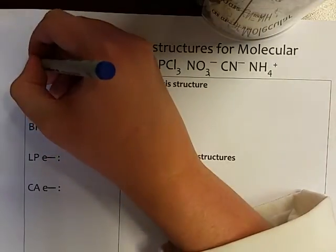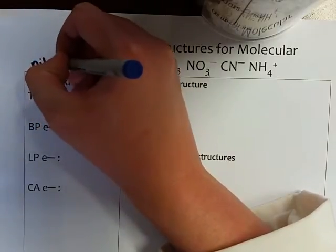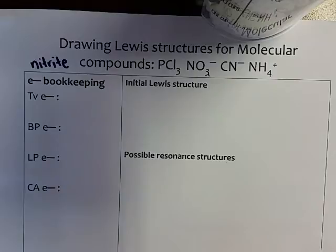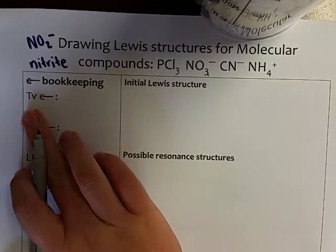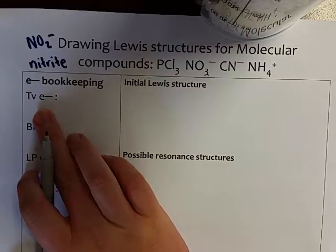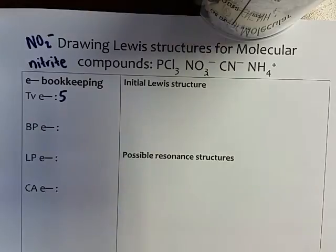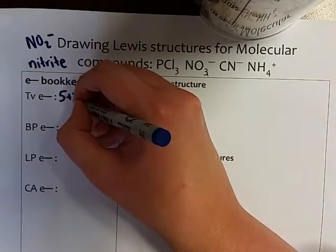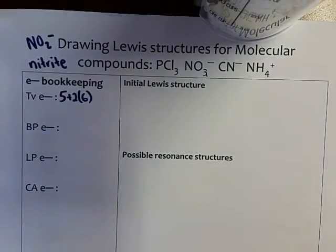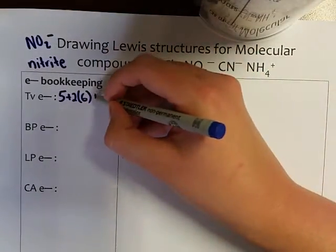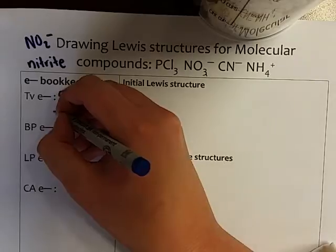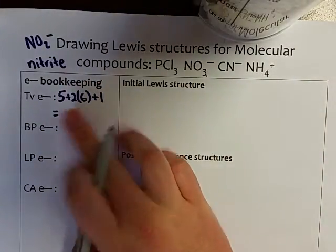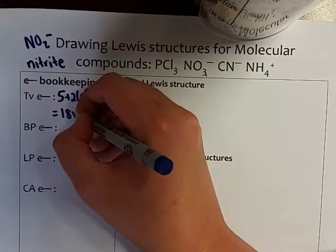So for example if we were looking at the nitrite ion, we all know that the formula is NO2 minus. Okay so what you do is you start with your electron bookkeeping. TVE stands for total valence electrons. Nitrogen has five valence electrons. We have two oxygens and they each have six valence electrons, and we have a negative charge. So we add an extra electron to our electron bookkeeping and we see that we end up with 12 plus 6 is 18 valence electrons.